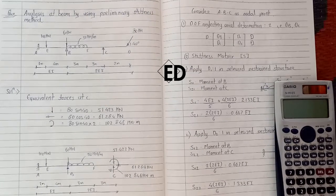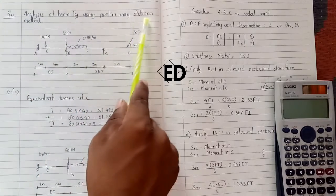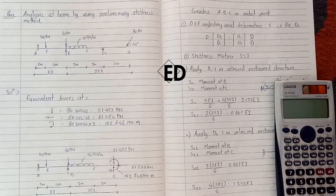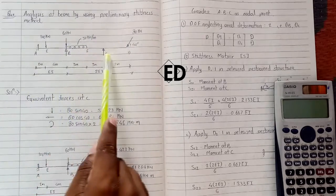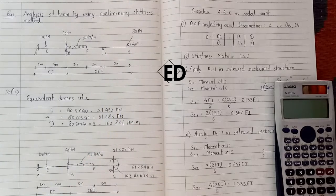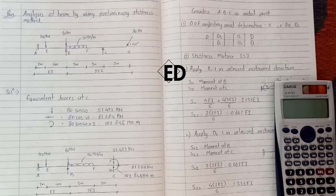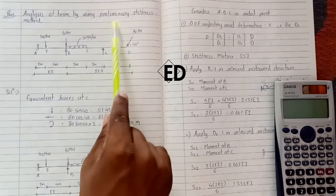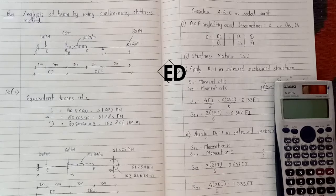Hello friend, welcome to Engineer. Today we see the analysis of a beam using the preliminary stiffness method. The question gives spans AB, BC, and CD with loading conditions as shown. Let us start with how the preliminary stiffness method is applied on this beam for getting the moments of each span.